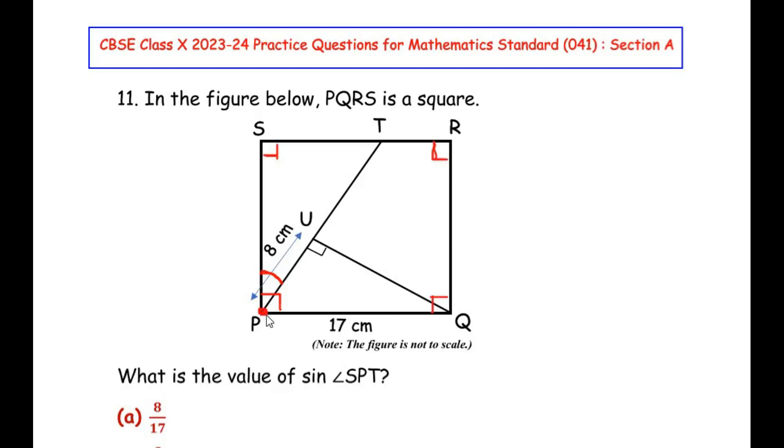Now once we do this, let us concentrate at point P of the square. The point P or the angle P is divided into two angles: one is angle SPT and angle TPQ.